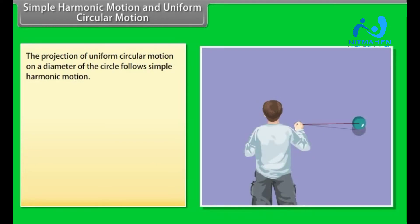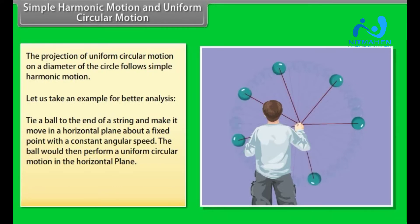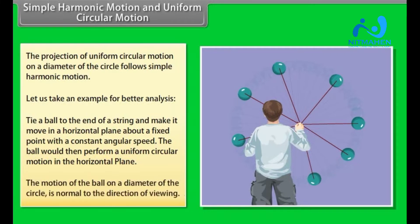Simple harmonic motion and uniform circular motion: the projection of uniform circular motion on a diameter of the circle follows simple harmonic motion. For example, tie a ball to the end of a string and make it move in a horizontal plane about a fixed point with constant angular speed. The ball performs uniform circular motion. Observed sideways, the ball appears to execute to-and-fro motion along a horizontal line with the point of rotation as the midpoint. The shadow of the ball on a perpendicular wall shows the motion of the ball on a diameter of the circle.